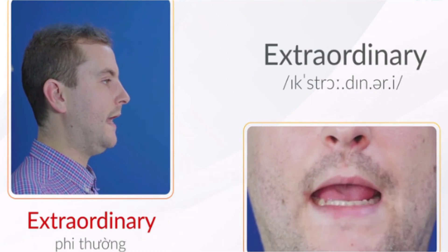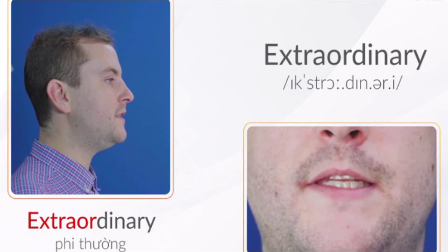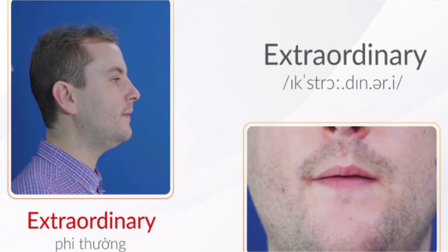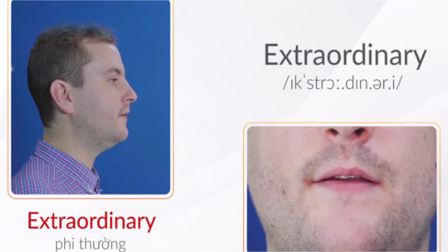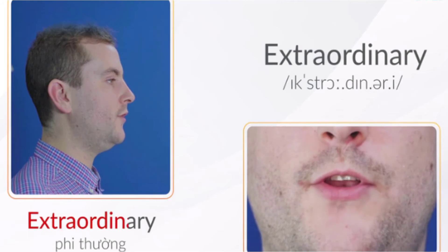Extraordinary. Từ này có 5 âm tiết, trọng âm rơi vào âm tiết thứ 2 các bạn nhé. Âm tiết đầu tiên có chữ âm I ngắn và kết thúc bằng âm C. Âm tiết thứ 2 bắt đầu bằng 3 phụ âm liên tiếp nhau: S, T và R. Âm tiết thứ 2 cũng chứa nguyên âm O dài.